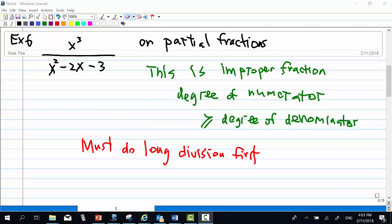Here in example 6, we have x power 3 over x square minus 2x minus 3. This topic is on partial fraction. However, the fraction we have is an improper fraction. Because the degree of the numerator, 3, is greater than or equal to the degree, which is 2, of the denominator. Therefore, we cannot do partial fraction now. We have to do long division first.